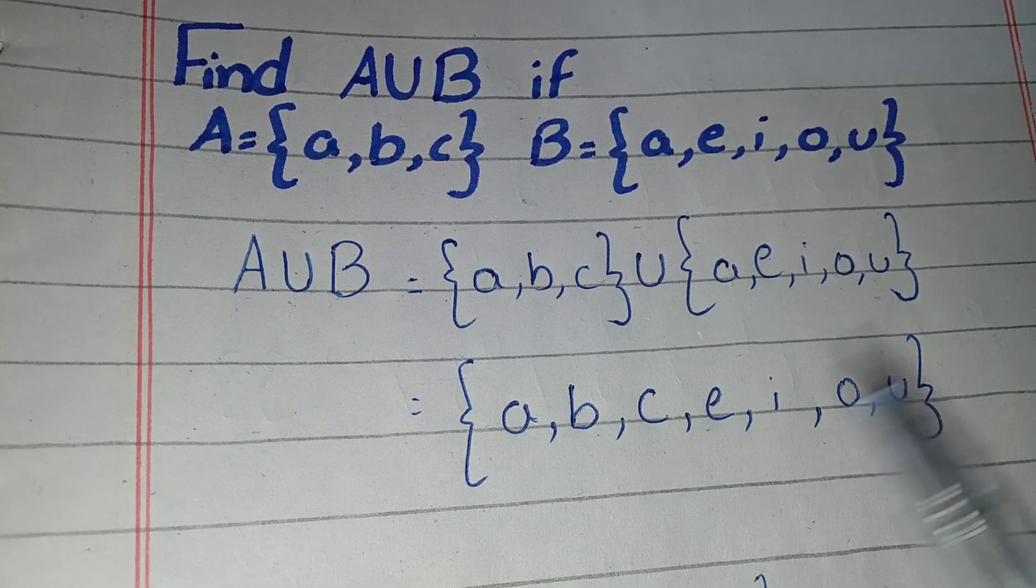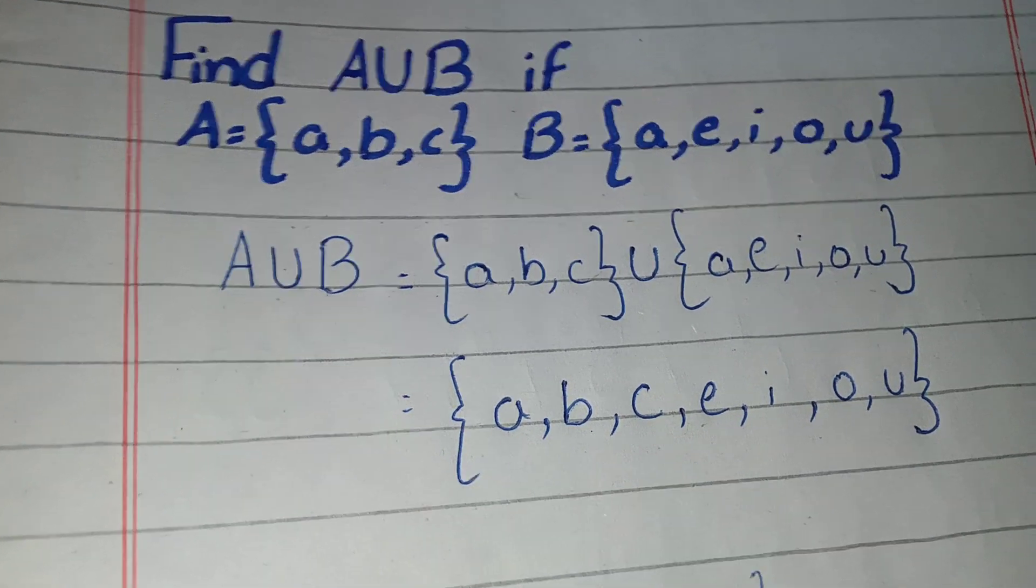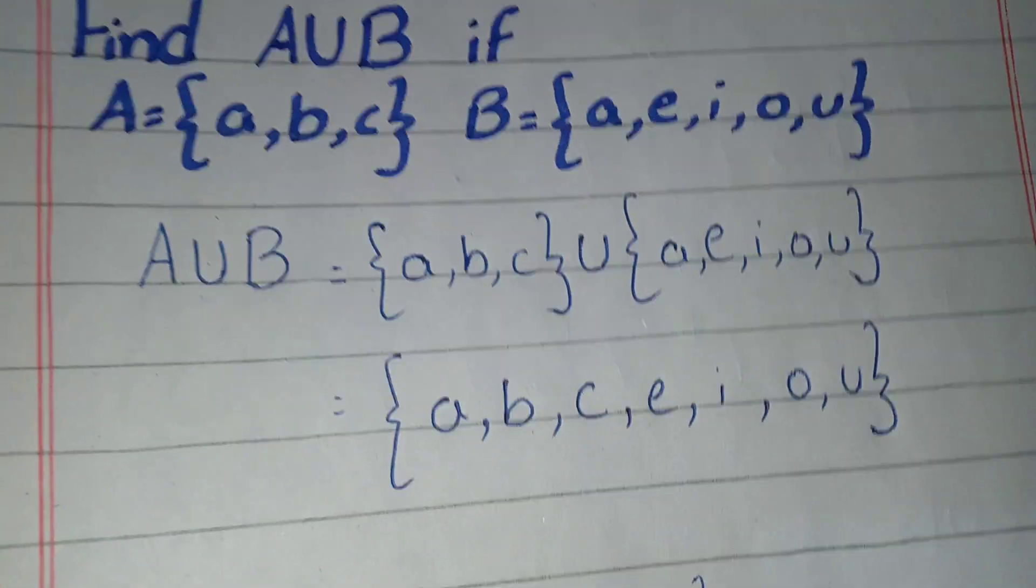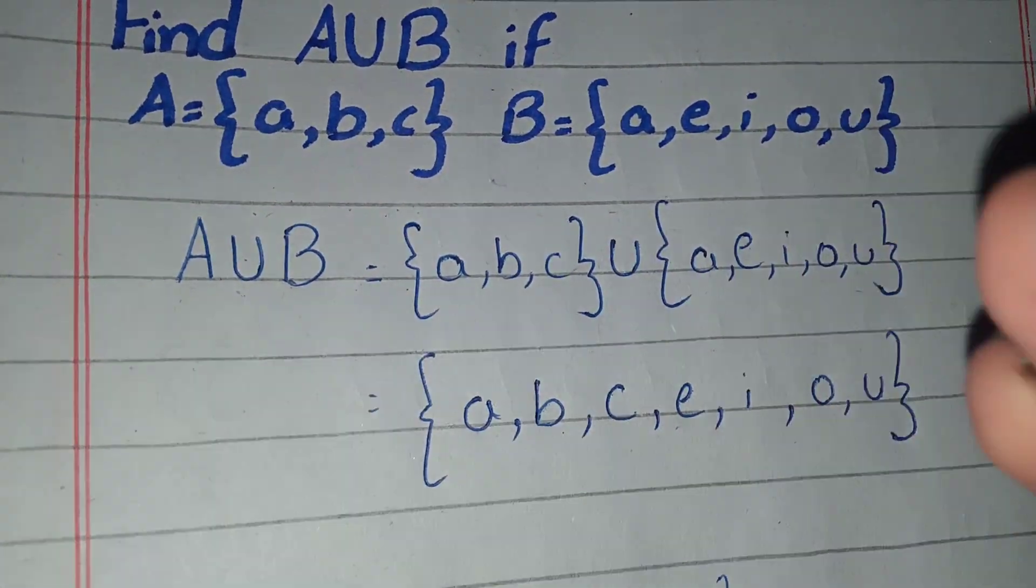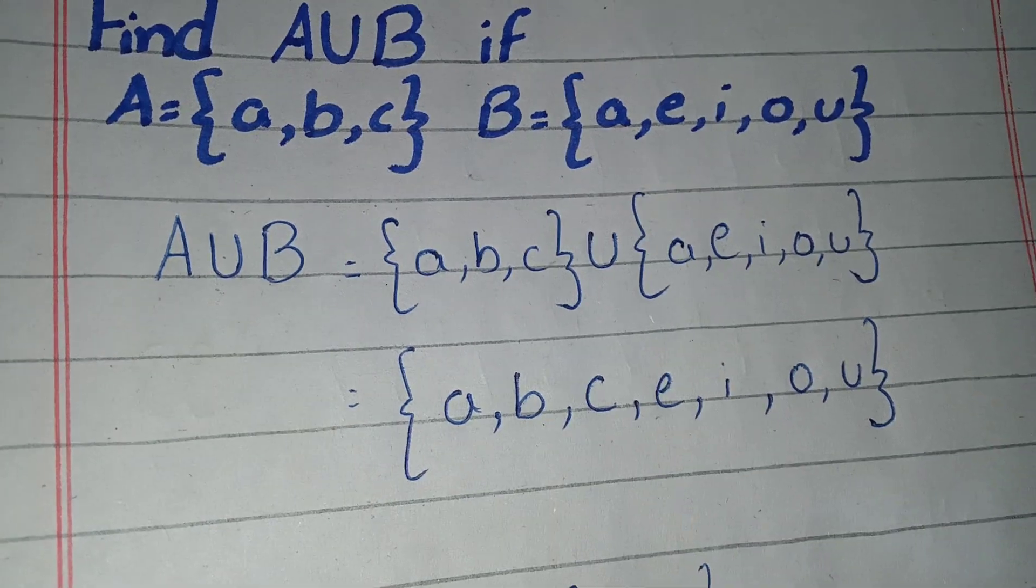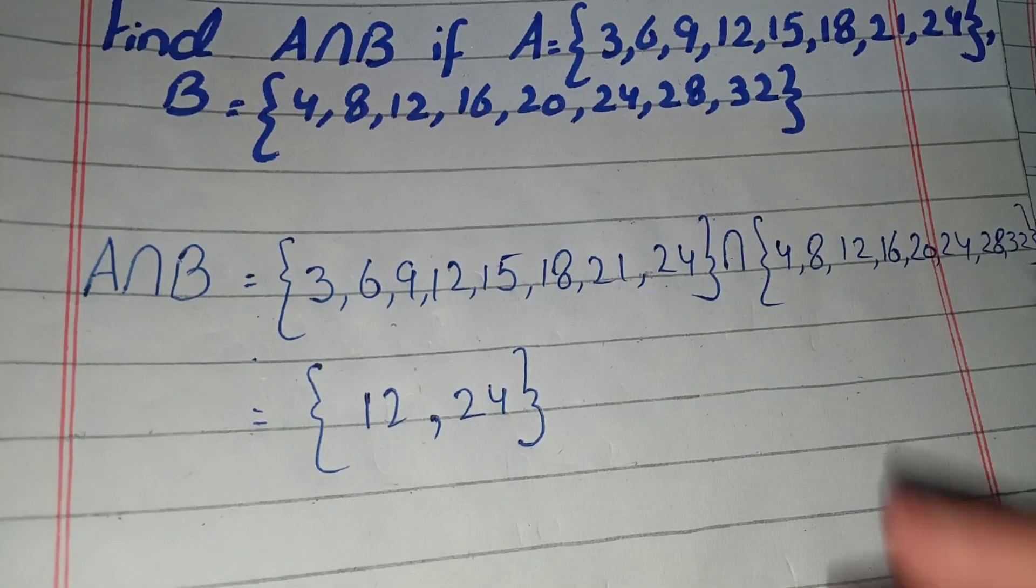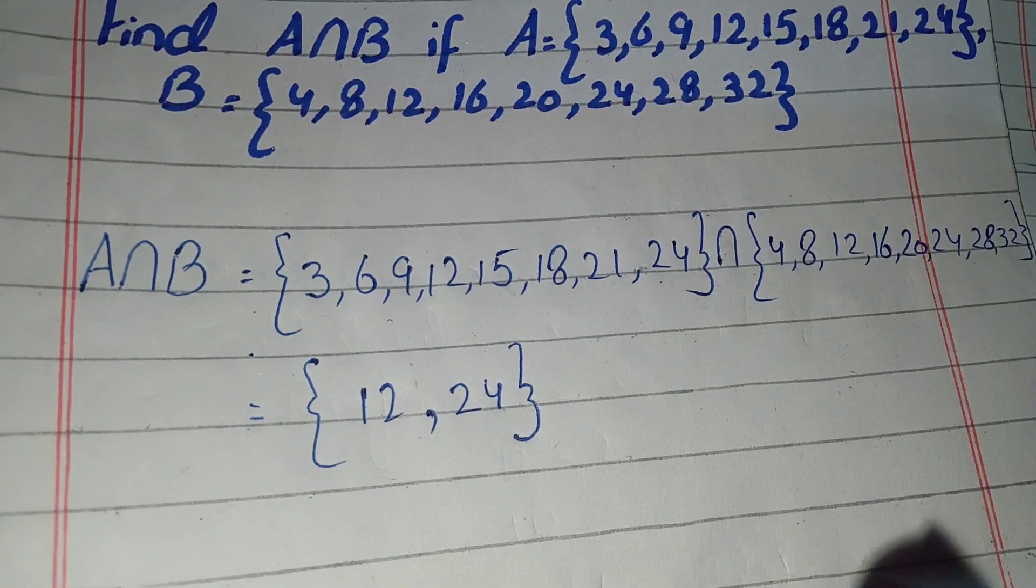With union we write all elements in sequence, and when there is an intersection we write only the common elements that the two sets share.